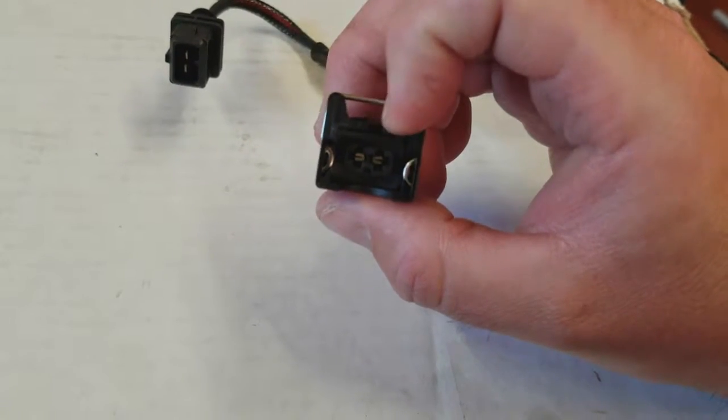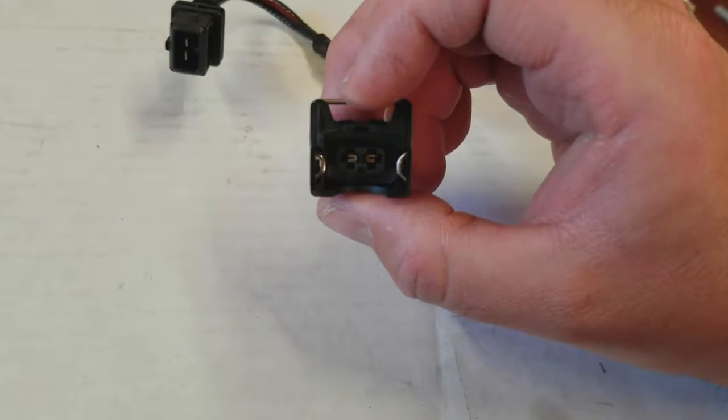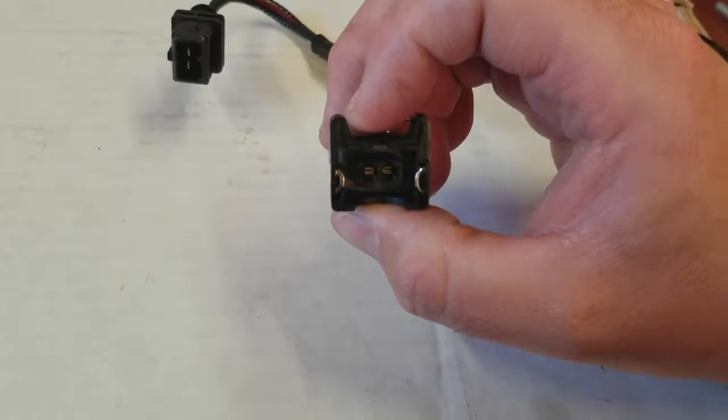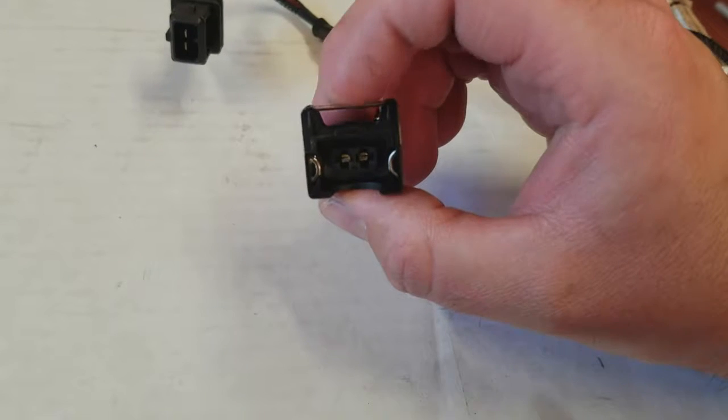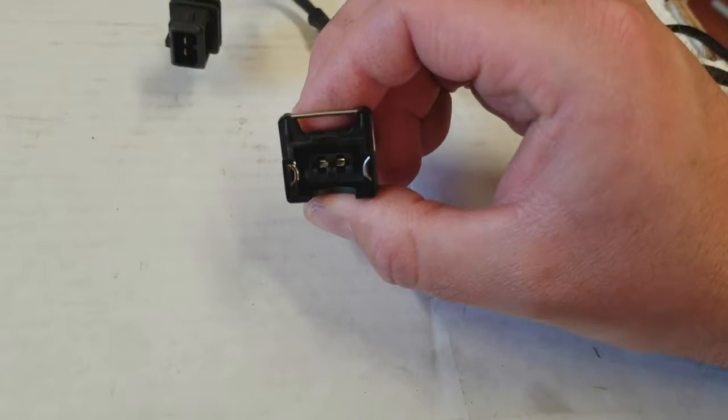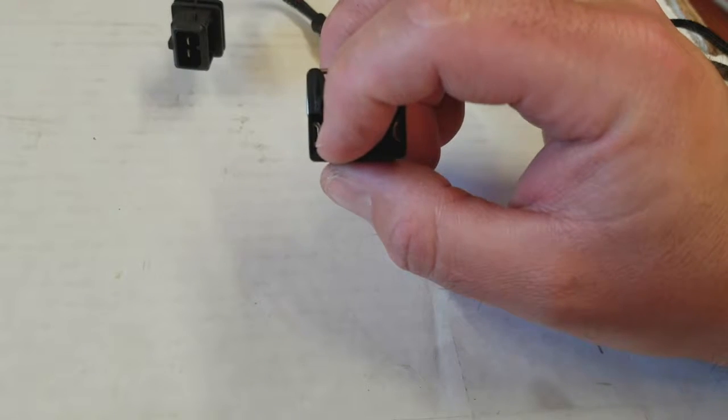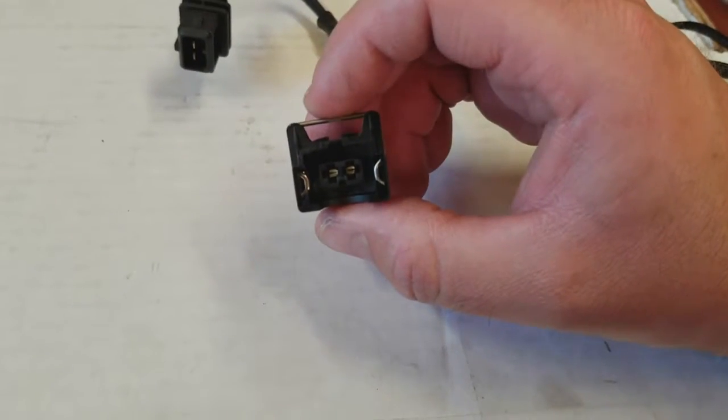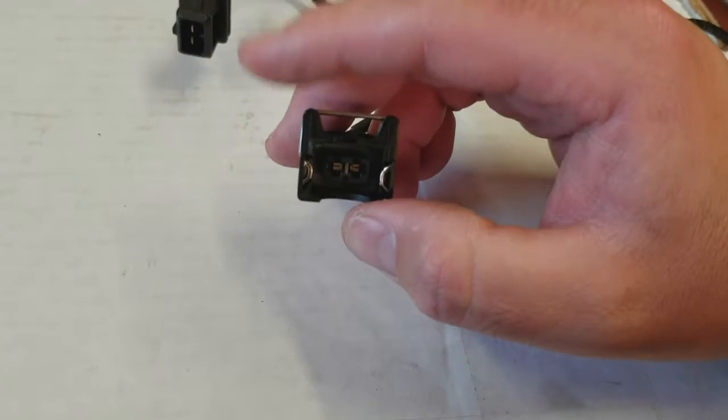On the BMW factory ones there is no tab. But those ones literally just pull off. Don't touch the metal clip. Just pull back on it gently and it'll come right off. And those ones don't lock. They're just kind of like a spring retainer.